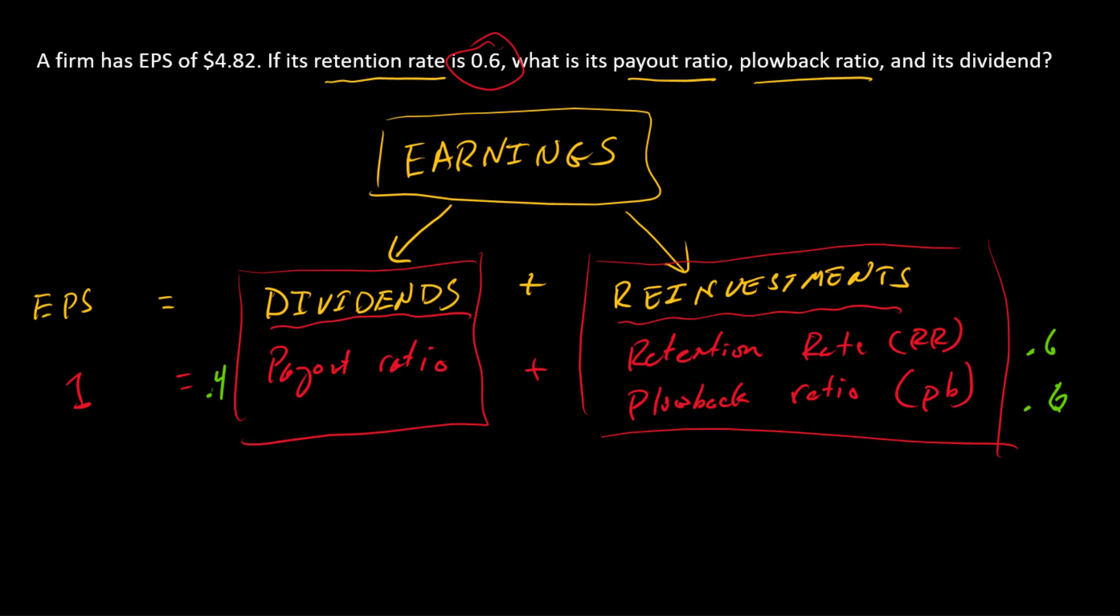So we've got all three of these. Now we just need dividends in terms of dollars. EPS is $4.82. We're given the retention ratio of 0.6, and so what we know is reinvested is 0.6 times 4.82, that's 2.892 per share. And so what's paid out as dividends is the rest: 0.4 times 4.82, and that is 1.928 per share.